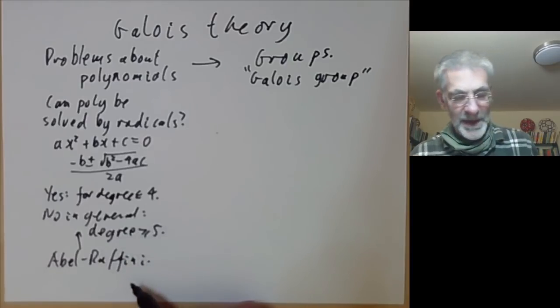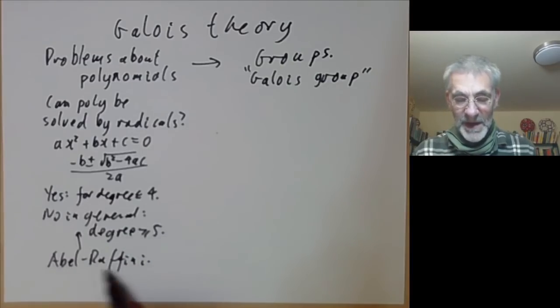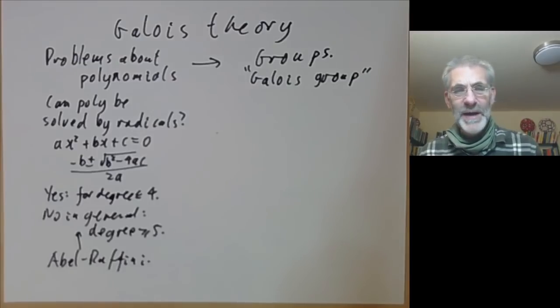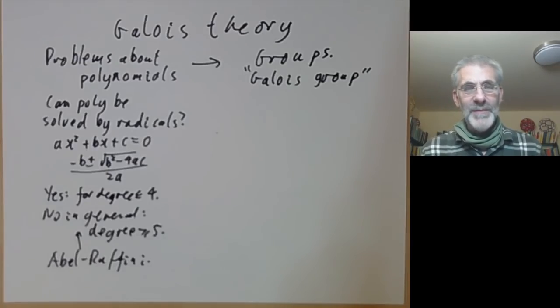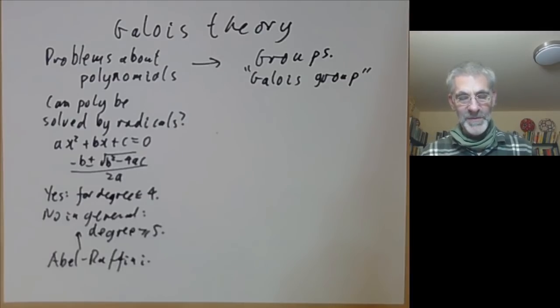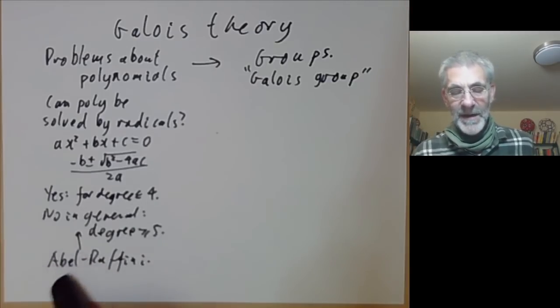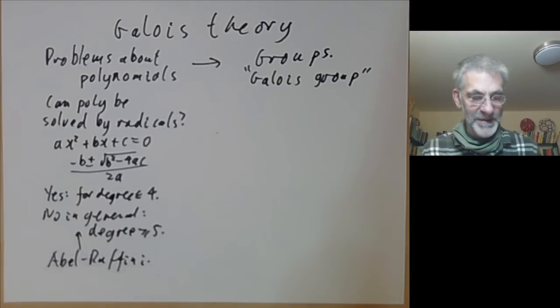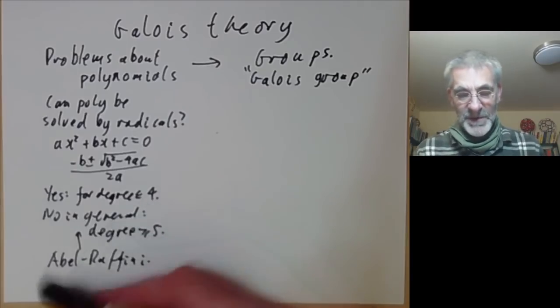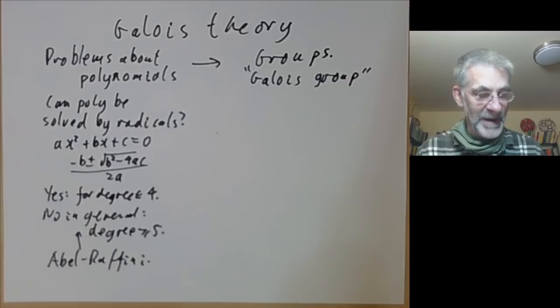It's not entirely clear who proved it first. Ruffini had a sort of 500 page proof except no one's really quite sure whether it was a proof or not. A little bit later Abel came along and gave a very clear six page proof of it. It's a complicated problem for historians to figure out how the credit should be divided.